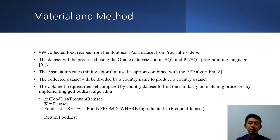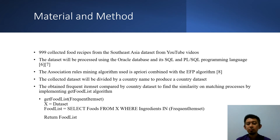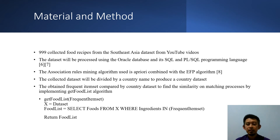We are implementing the EFP algorithm with the API into the Oracle database. The collected dataset will be divided by country name to produce a country dataset. So there will be 11 datasets, consisting of 11 countries of Southeast Asia. Frequent itemsets are then compared across country datasets to find similarities using the GetFoodList algorithm — a function we created to process the dataset and select data from the vertical itemset to find similarities.